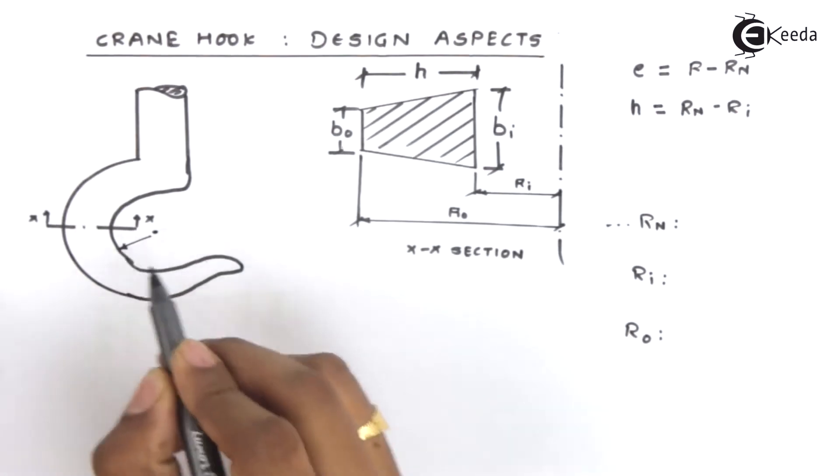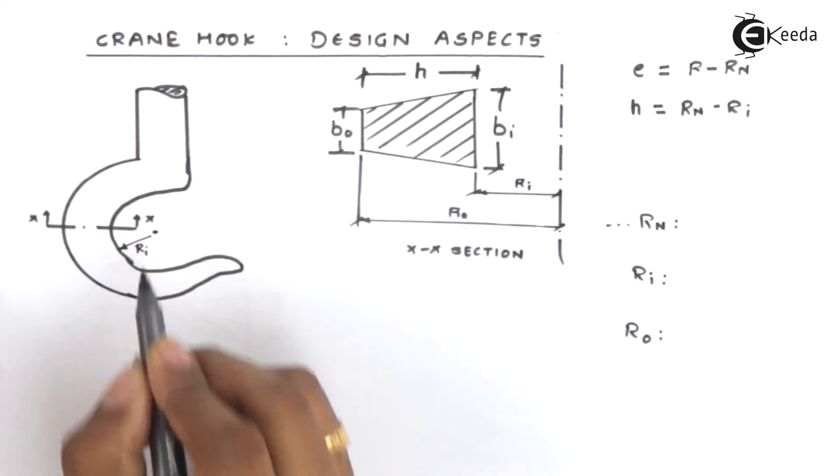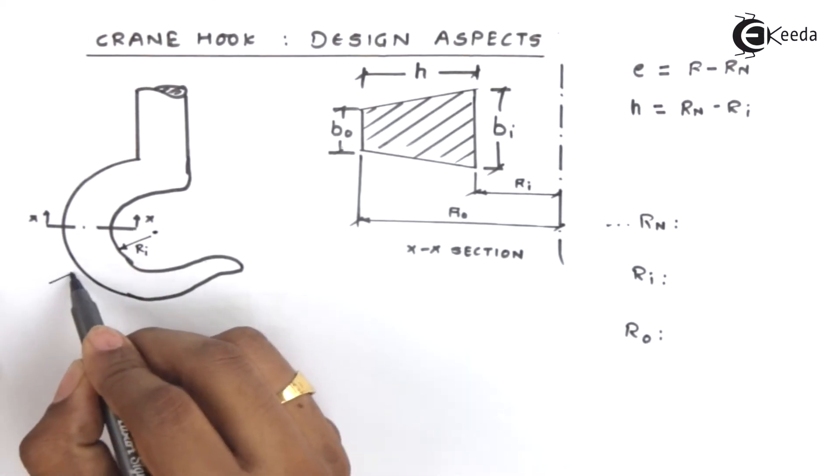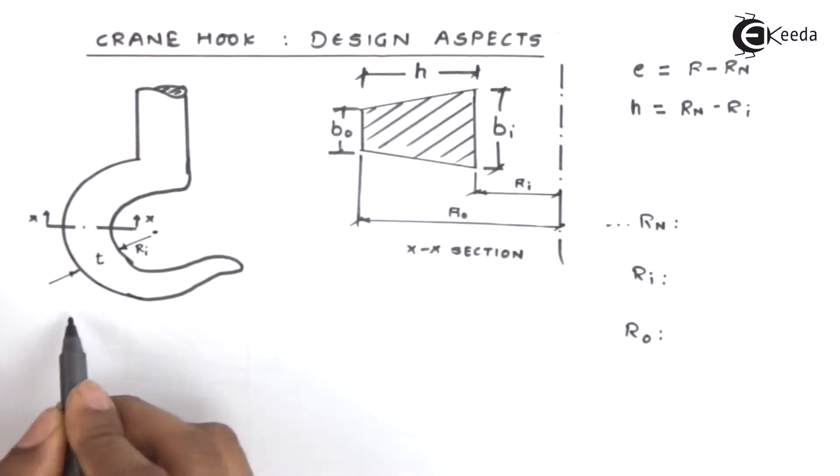So that radius is the inner radius that we have. If we add to that certain thickness that becomes outer radius and therefore outer radius is nothing but inner radius plus thickness t.